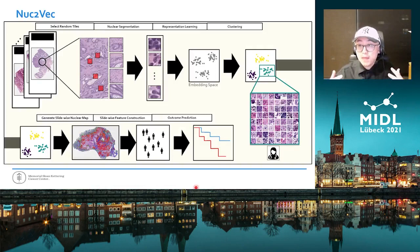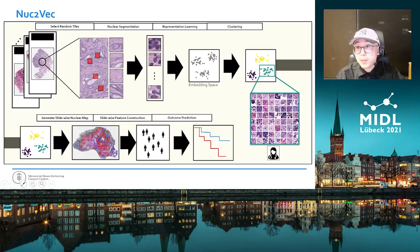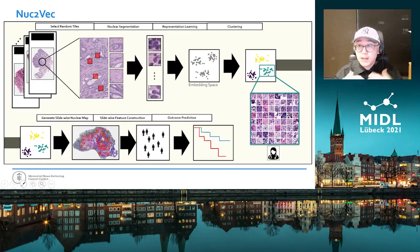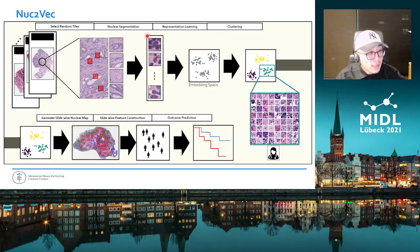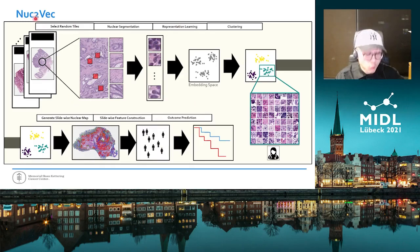Therefore, we propose a representation learning method that leverages the contrastive learning framework that has recently been popularized in the deep learning community. With this contrastive learning method, we can learn the representations of nuclei in an unsupervised manner. This is the overall structure of our proposal: we first collect random tiles from histopathology images, then we perform nuclei segmentation with HoverNet. Then we extract nuclei images centered around each segmented nucleus, and then we use our contrastive representation learning method called Nuke2Vec to learn an embedding vector from each nuclear image.